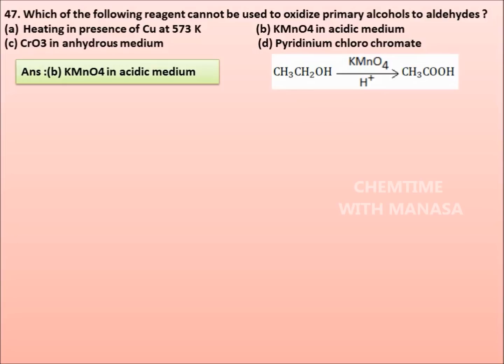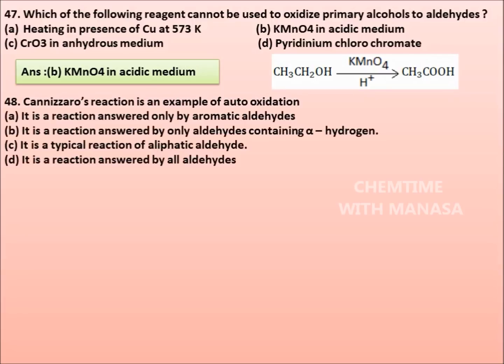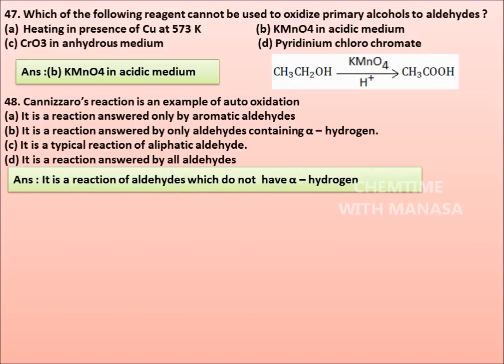Question number 48. Cannizzaro's reaction is an example of auto-oxidation. Options: It is a reaction answered only by aromatic aldehydes, by only aldehydes containing alpha-hydrogen, it is a typical reaction of aliphatic aldehydes, it is a reaction answered by all aldehydes. Friends, actually here all the 4 options are wrong. Because Cannizzaro's reaction is a reaction of aldehydes which do not have alpha-hydrogen. So all the 4 statements are wrong here.